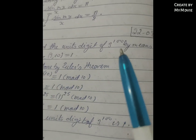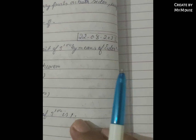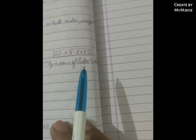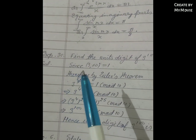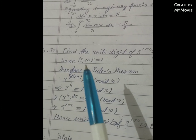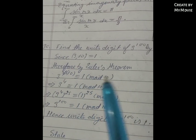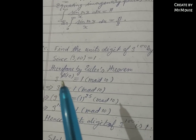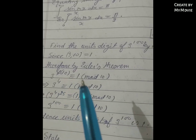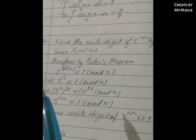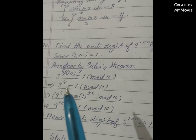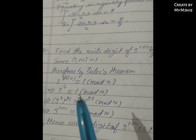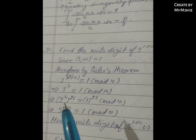To find the unit digit of 3 raised to power 100 using Euler's theorem: since the greatest common divisor of 3 and 10 is 1, Euler's theorem gives us that 3 raised to power φ(10) is congruent to 1 modulo 10, which means 3 raised to power 4 is congruent to 1 modulo 10.